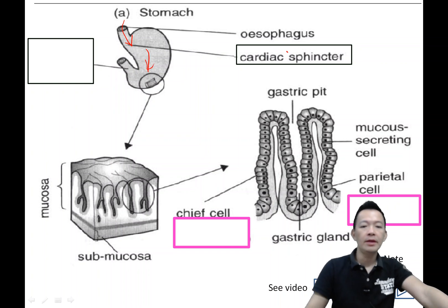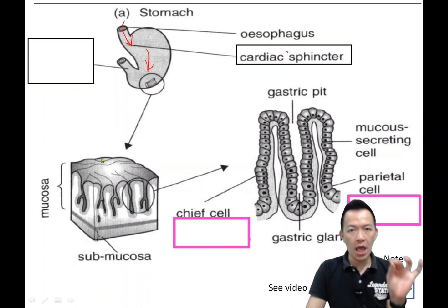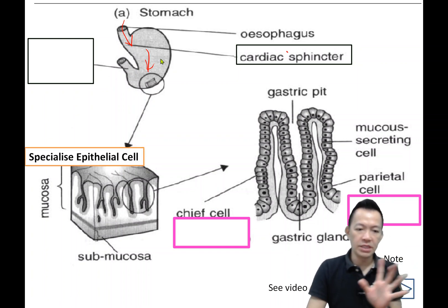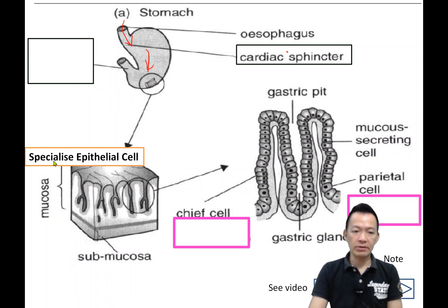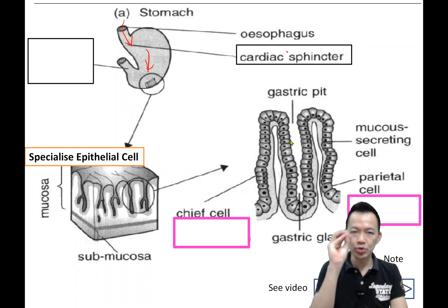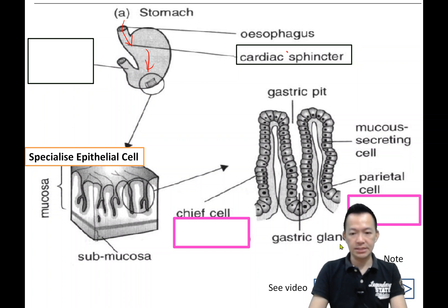If you look at the wall of the stomach, the wall of the stomach is actually made up of a lot of specialized epithelial cells. These specialized epithelial cells join together to form the gastric glands.